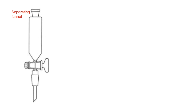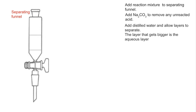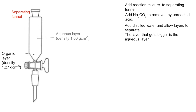We need a different method, and the method involves a separating funnel. The first thing the student would need to do is put the mixture into the funnel. Because there's been some acid used in the process, we're going to add some sodium carbonate to remove any unreacted acid. Then we're going to add some distilled water, and the layer that gets bigger is the aqueous layer. You can see this upper layer is the one that's grown in size, so this must be the aqueous layer, because the organic layer has a higher density than water.